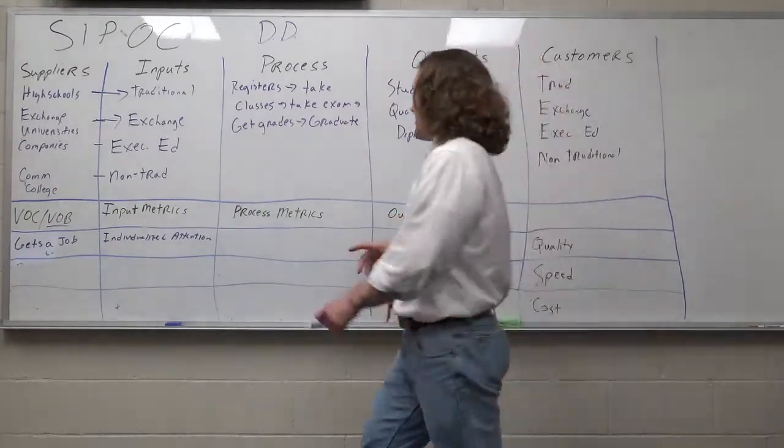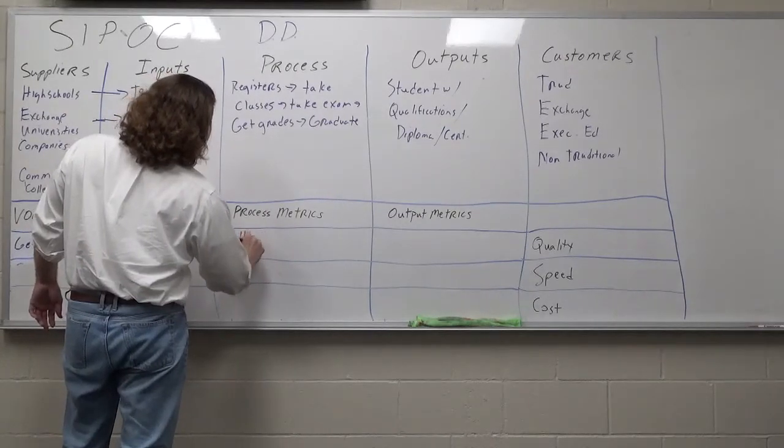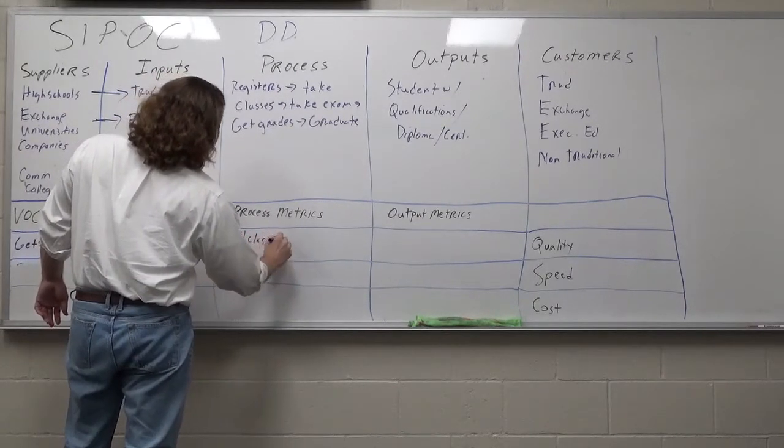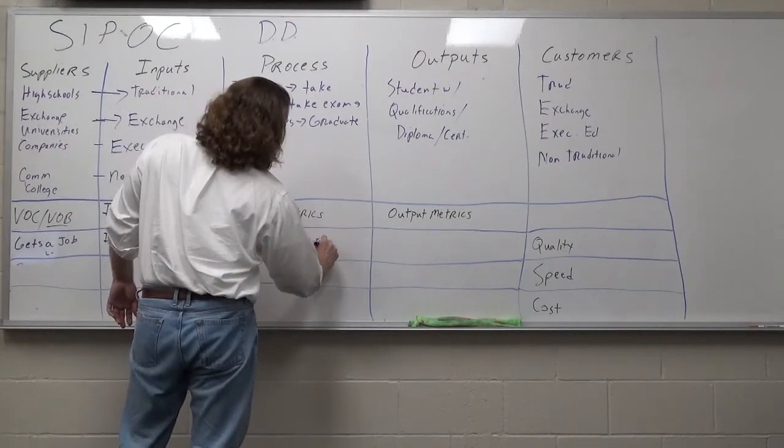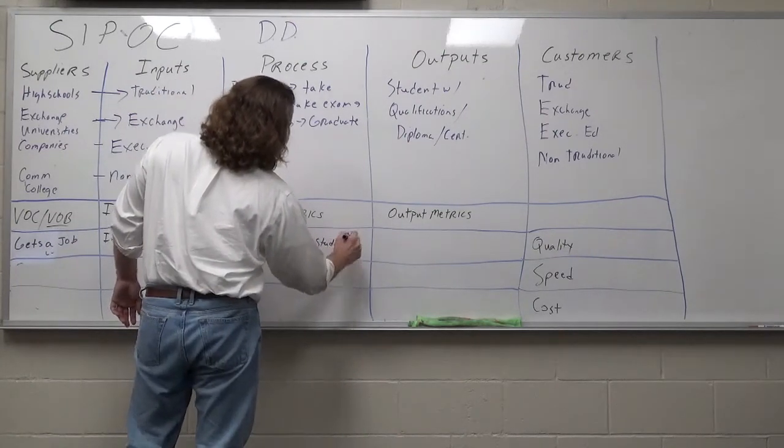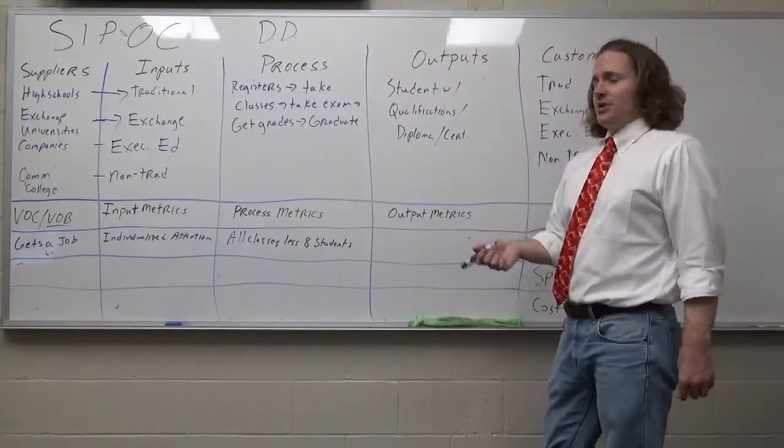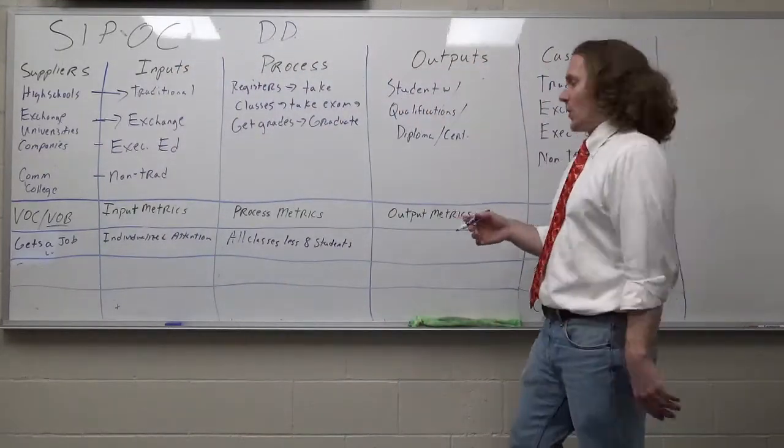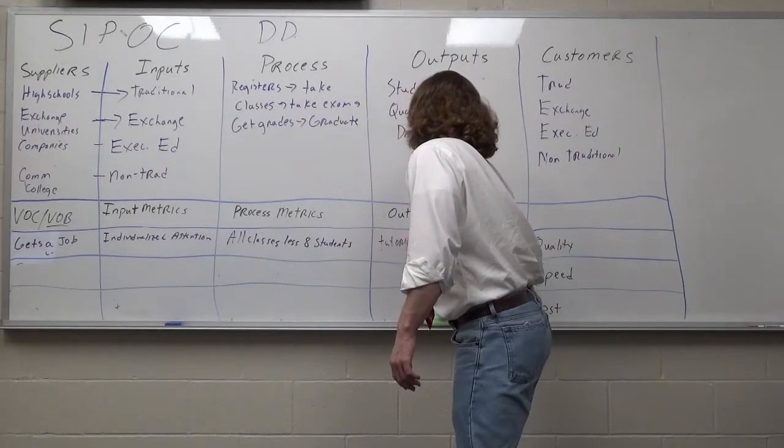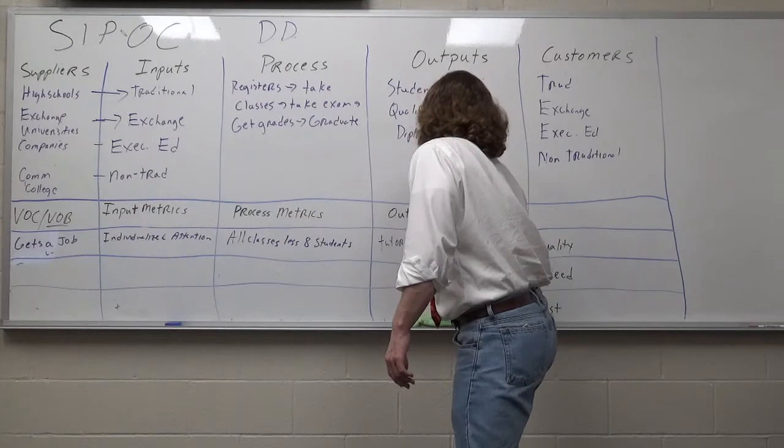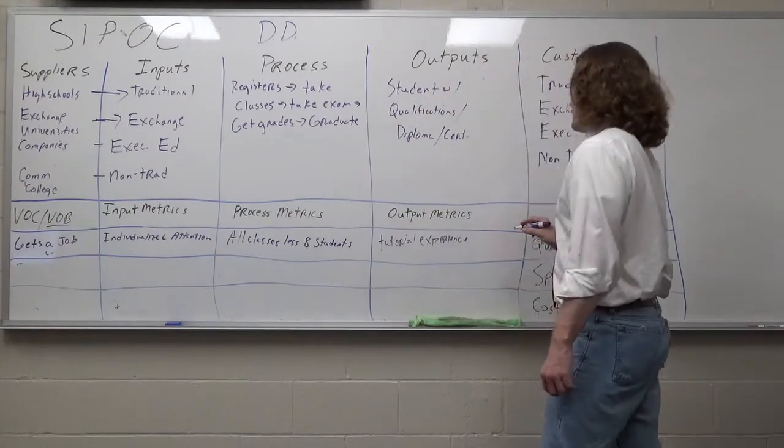What kinds of things do we need to have for a process metric? Maybe all classes, less than eight students. Output metric, students who have almost a tutorial experience. Actually, let me rephrase that one.